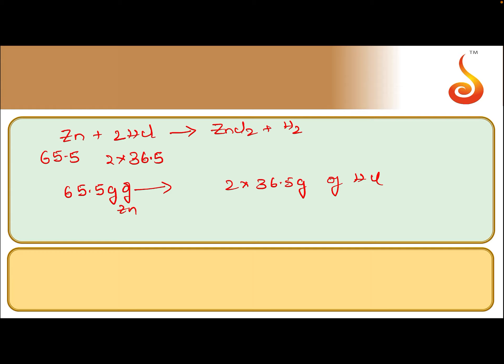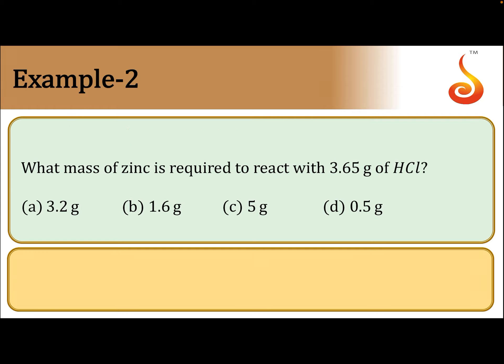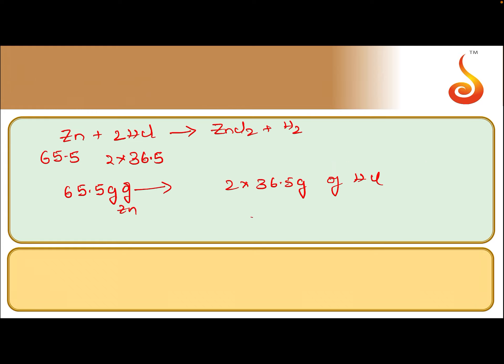But what is the mass of zinc when the mass of HCl given is 3.65 grams? For 3.65 grams of HCl, how much amount of zinc is required?